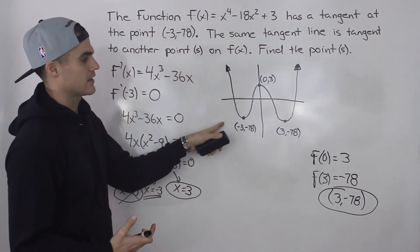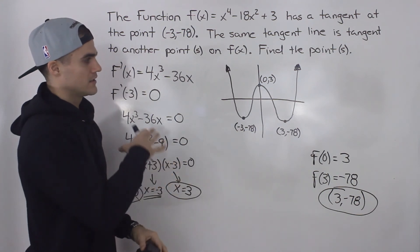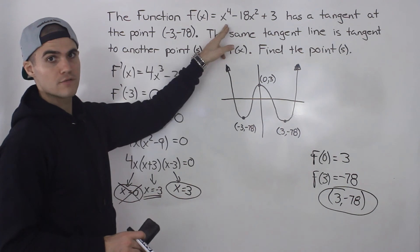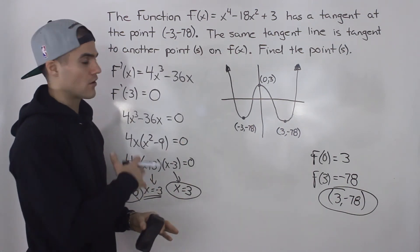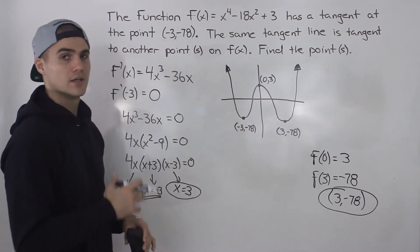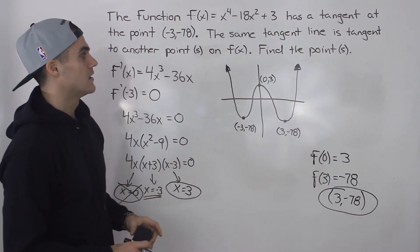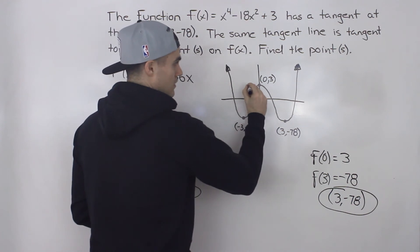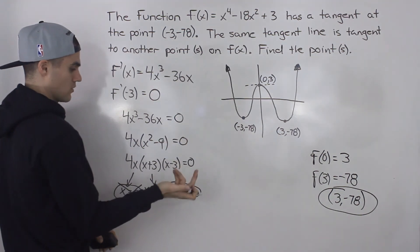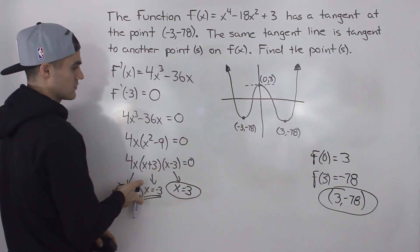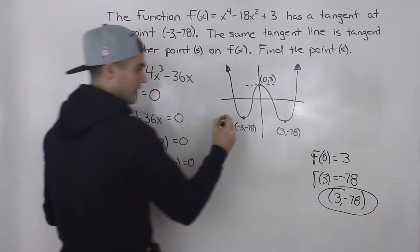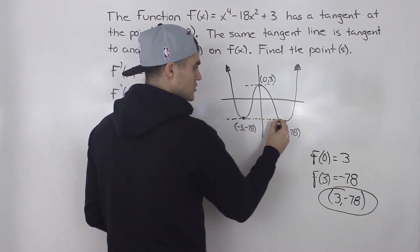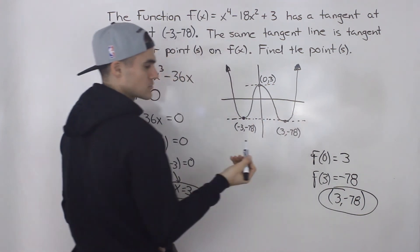The way this function actually looks is shown here. At the point (0, 3) there's a tangent with a slope of 0. And these two points, (-3, -78) and (3, -78), both have a slope of tangent of 0 — and not only that, it's the same tangent line. That's what the question was asking for: given the point (-3, -78), find another point with that same tangent line.